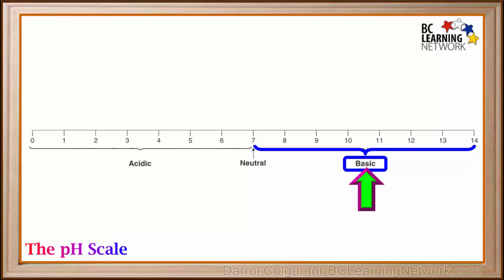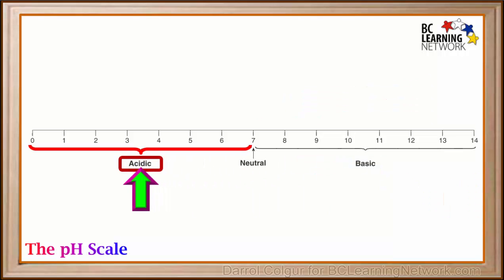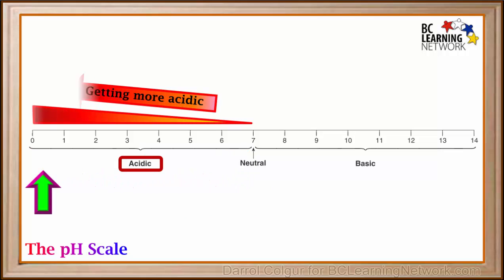Not only is above 7 basic, but the higher the pH gets above 7, the more basic it is. A solution with a pH of 14 is much more basic than a solution with a pH of 8. And not only is a solution with a pH below 7 acidic, but the lower the pH is, the more acidic the solution is.